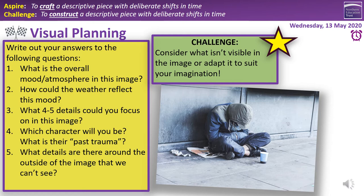Question three: what four to five key details could you focus on in this image? It's a sparse image, so zoom in and see what you can find. Question four: which character will you be and what's their past trauma? There's one character in the picture and you're welcome to be that person, but why not be a bystander — someone walking past, a police officer — or even use the versatile character you created last week? Question five: what details are there around the outside of the image that we can't see? Be creative — those could be vital in your description. Give yourself about six minutes to answer those five questions, then pause the recording.